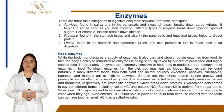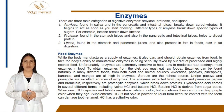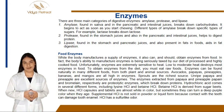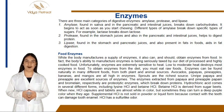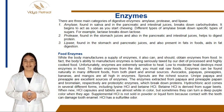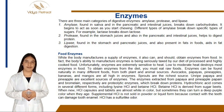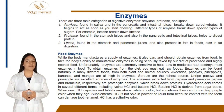Food enzymes. While the body manufactures a supply of enzymes, it also can and should obtain enzymes from food. In fact, the body's ability to manufacture enzymes is being seriously taxed by diets of processed and highly cooked food. Unfortunately, enzymes are extremely sensitive to heat. Low to moderate heat destroys most enzymes in food. To obtain enzymes from the diet, you must eat raw foods. Enzymes can be found naturally in many different foods, from both plant and animal sources.